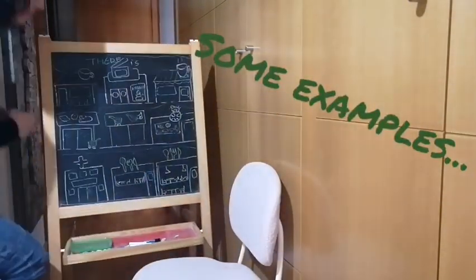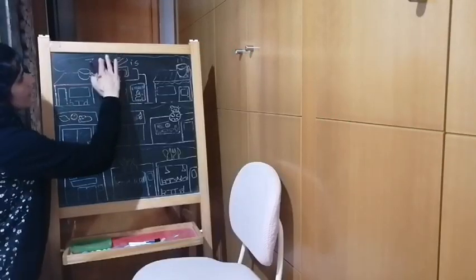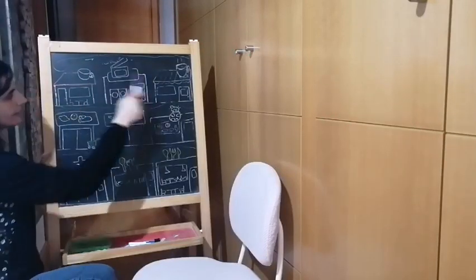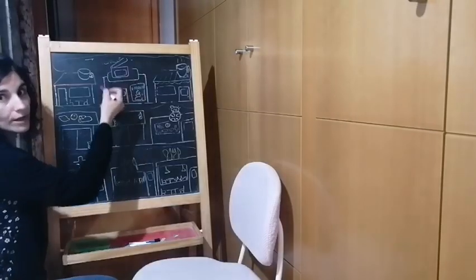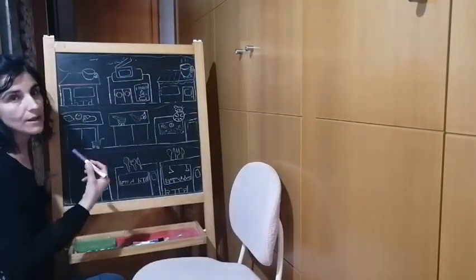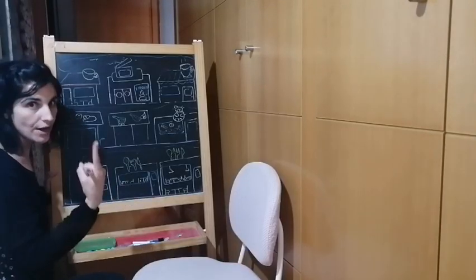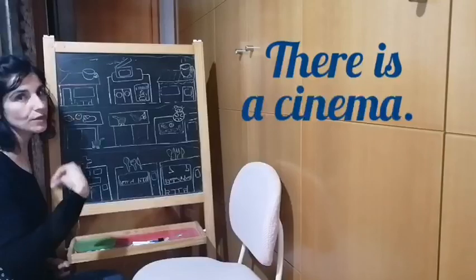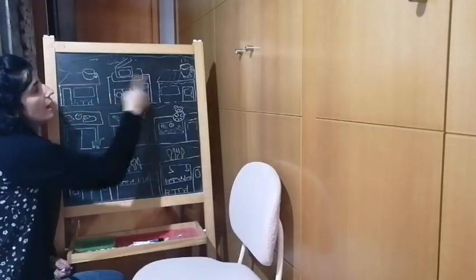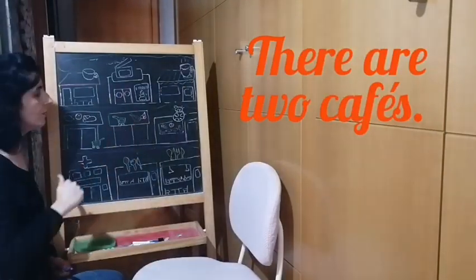So let's see some examples. Do you see this line? In this line we can see one cinema but we can also see two cafes. So we can say there is a cinema and there are two cafes.